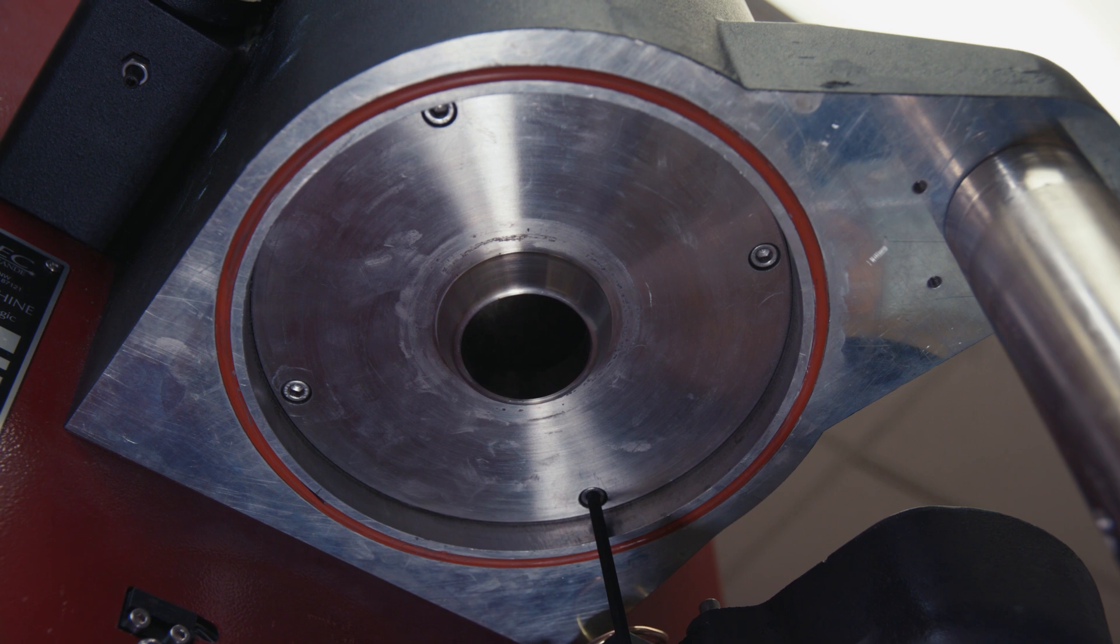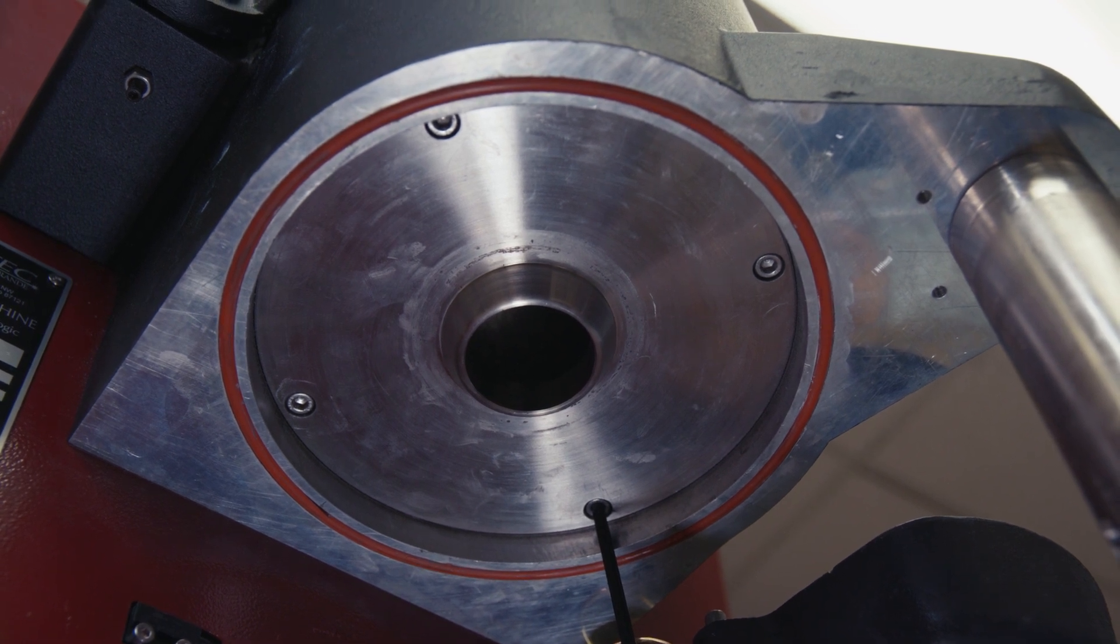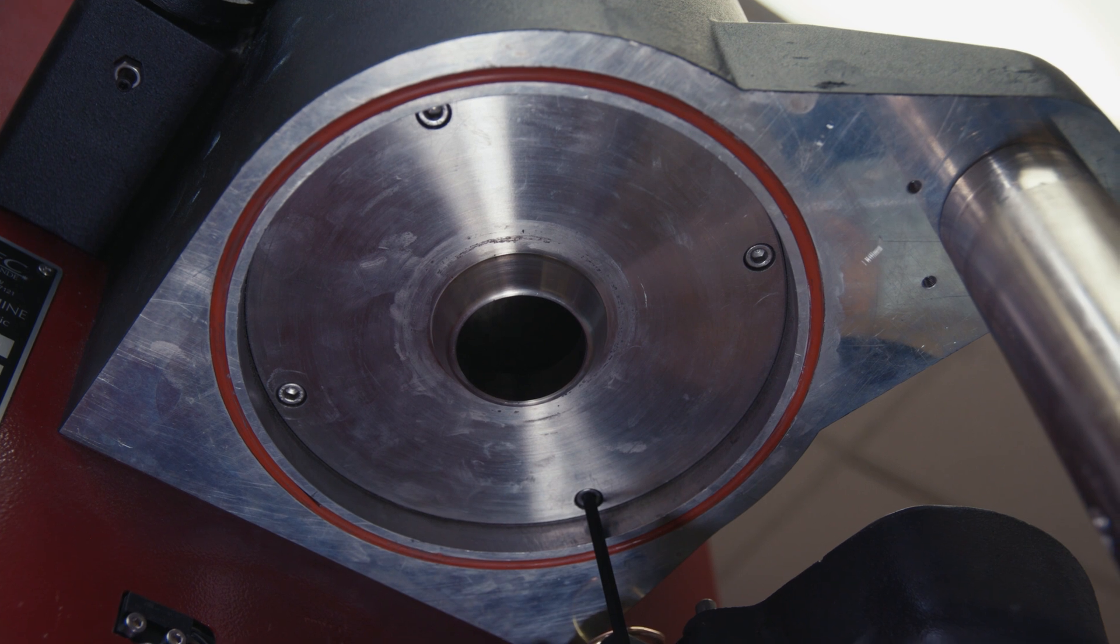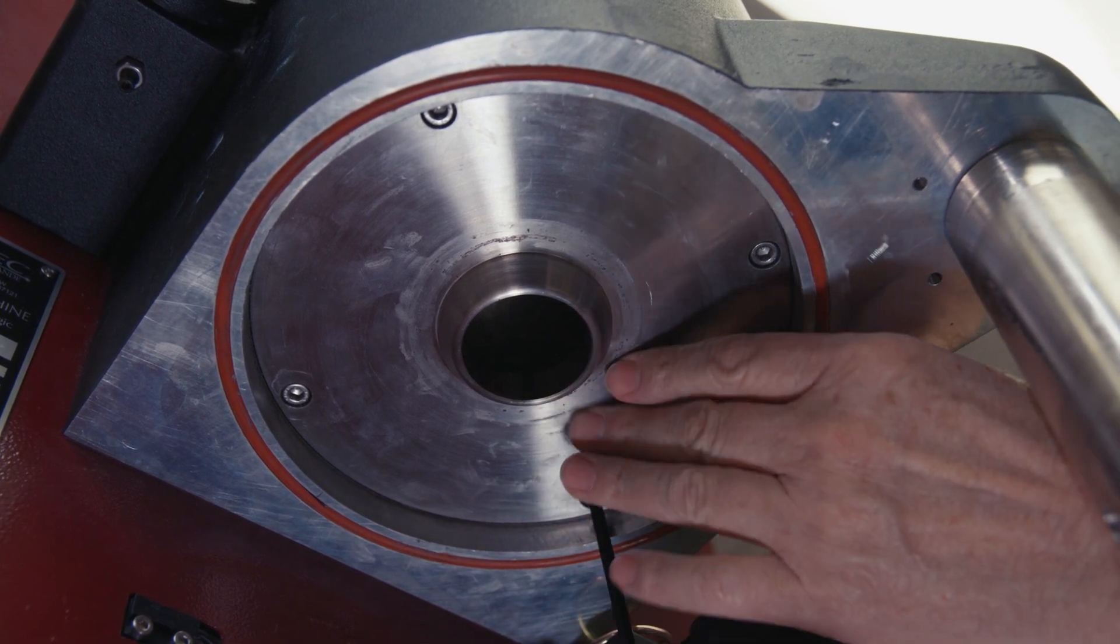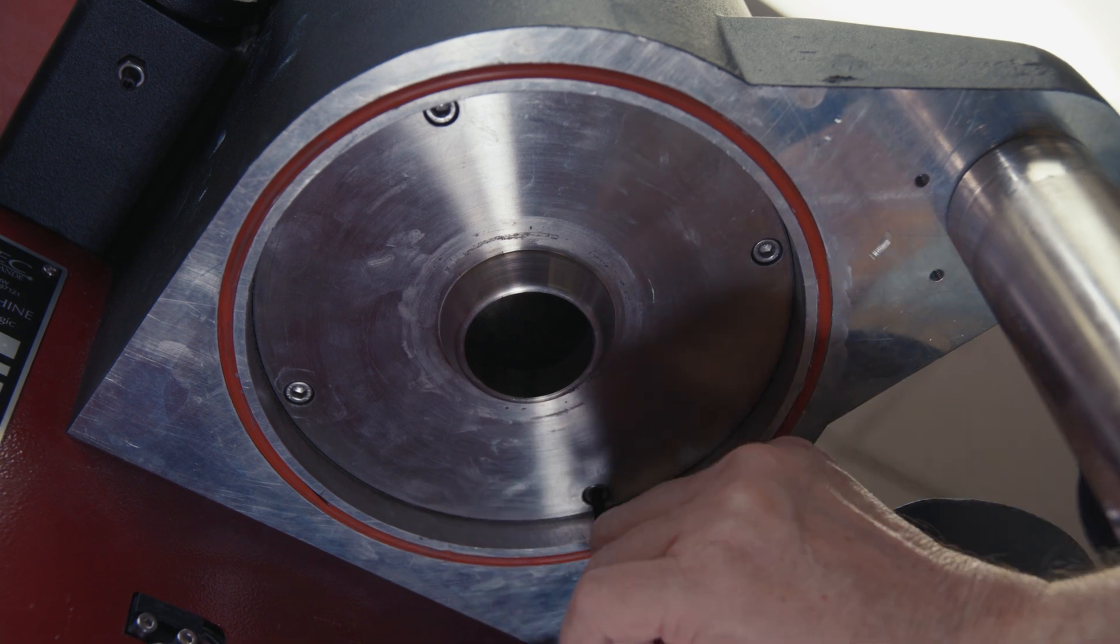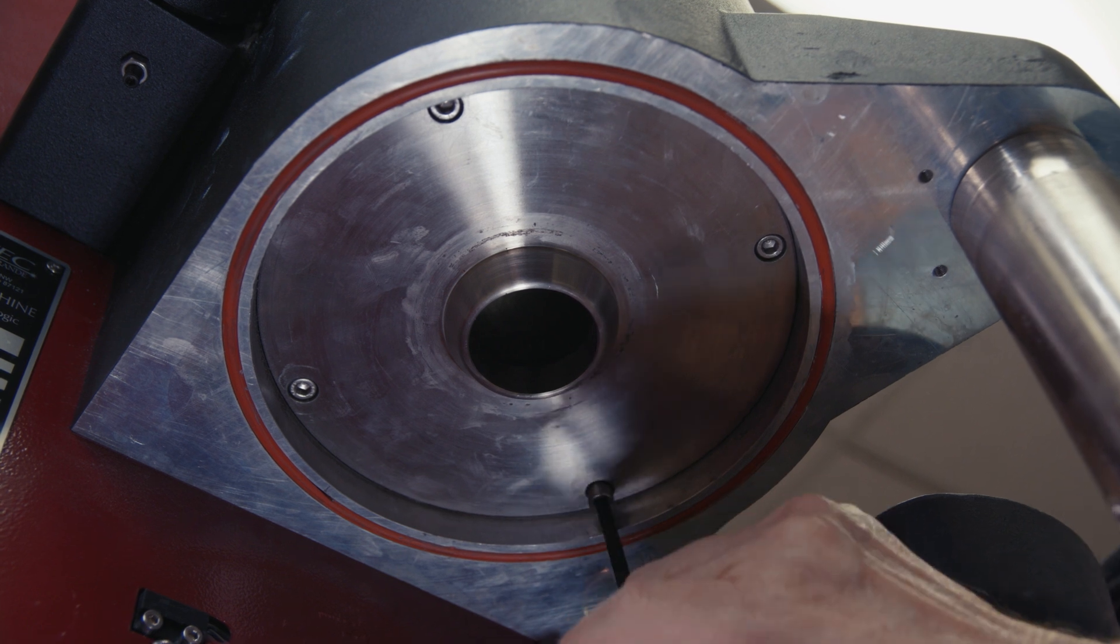After you've got the flask removed, then you're going to need to remove the crucible and all the consumables inside the flask chamber. So in order to get to those, we need to remove this plate. There are four screws here that you need to loosen with a 5mm wrench, and we'll do that now.